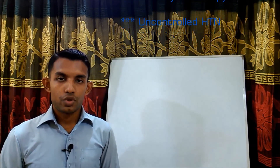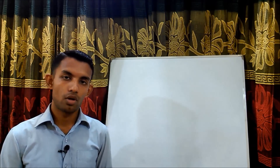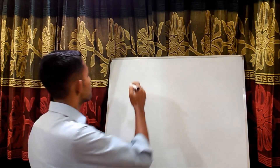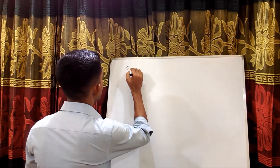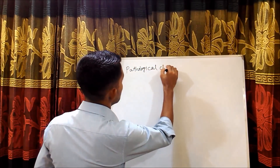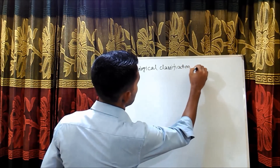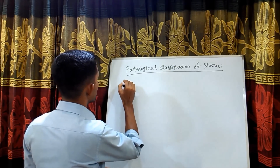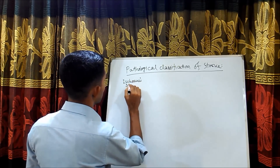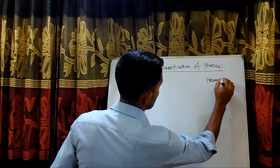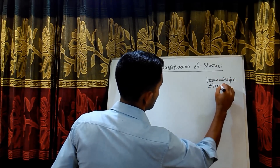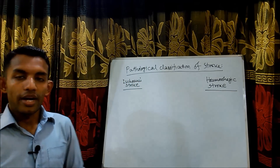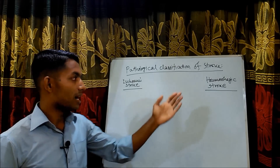Now the classification of stroke. There are two classifications of stroke: pathological classification and clinical classification. According to the pathological classification, there are ischemic stroke and hemorrhagic stroke.